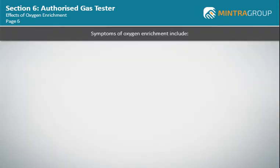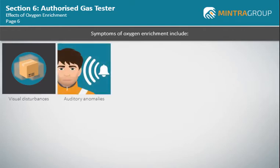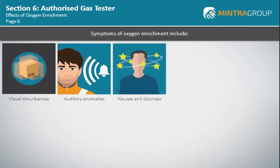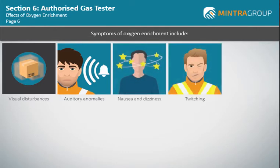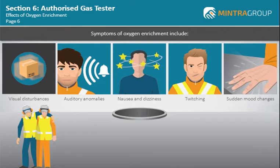Symptoms of oxygen enrichment include visual disturbances such as tunnel vision, auditory anomalies such as ringing ears, nausea and dizziness, twitching especially of facial muscles, and sudden mood changes such as irritability or euphoria. Sometimes, people who have been affected by oxygen enrichment act as if they are drunk, and this can have an effect on their decision-making abilities.